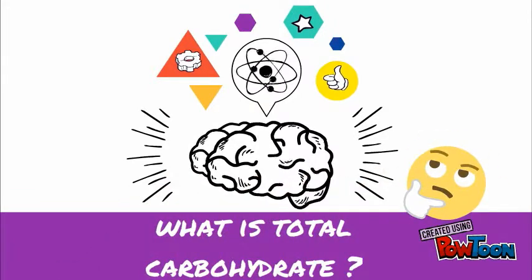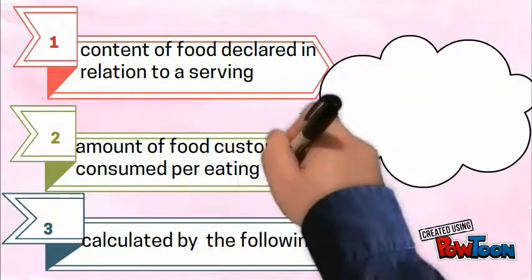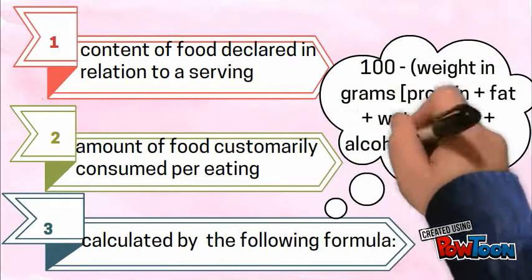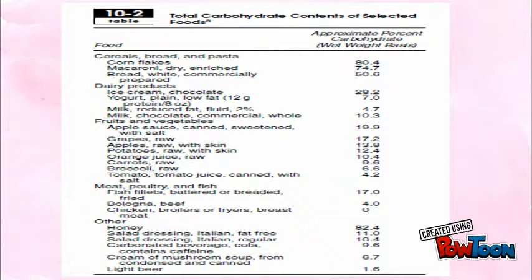What is total carbohydrate? Total carbohydrate is a content of food declared in relationship to a serving. Second, it is the amount of food customarily consumed per eating by a person. Third, it can be considered by the following formula. Total carbohydrate content of selected food such as cereal, bread, and pasta contains 80.4% of carbohydrate, while white commercial bread contains 50.6% of carbohydrate.